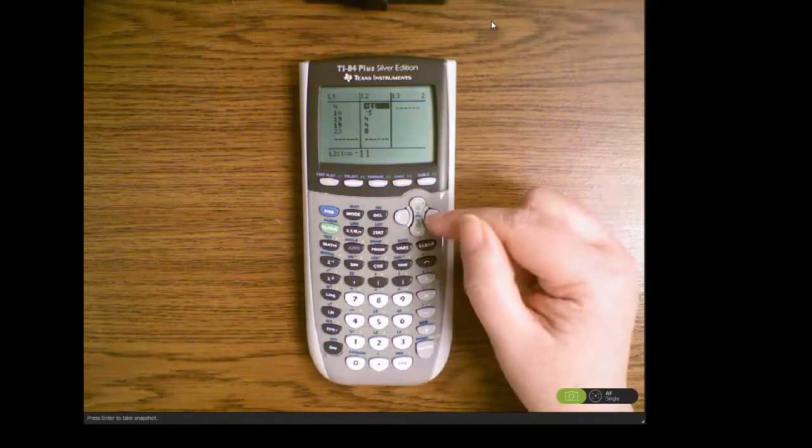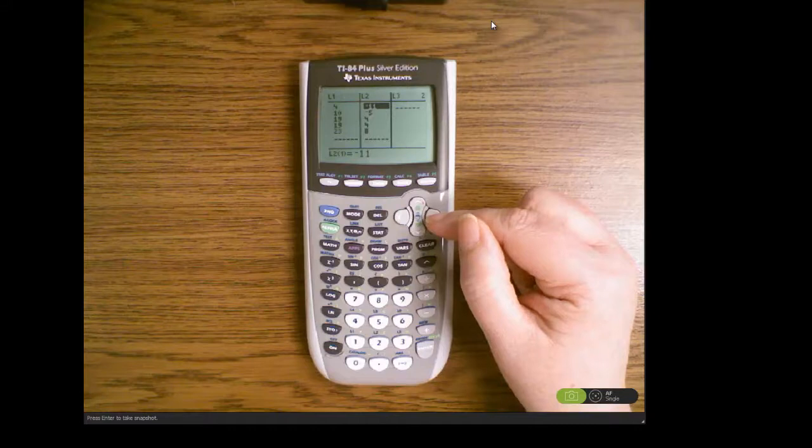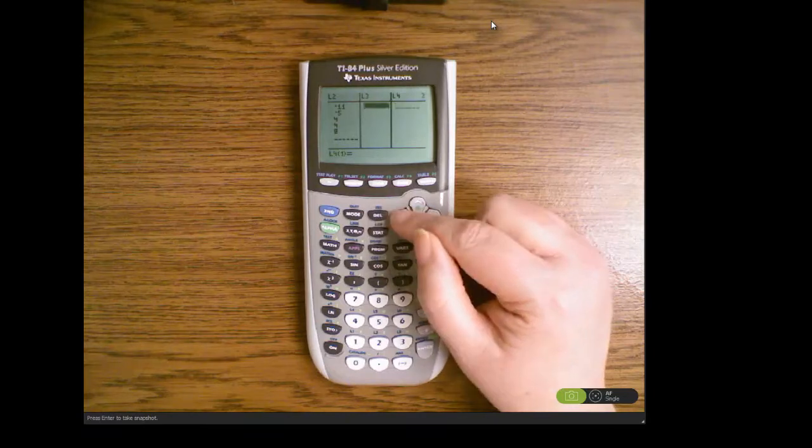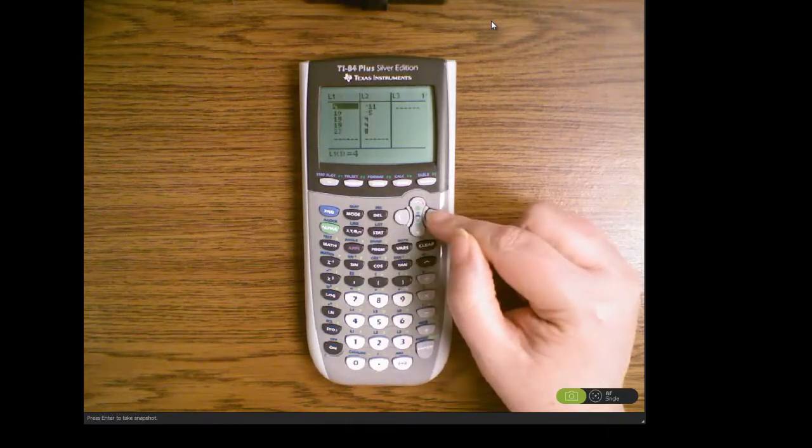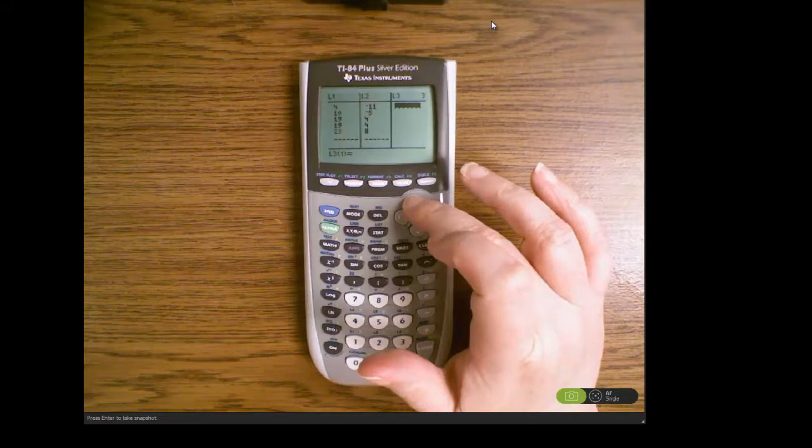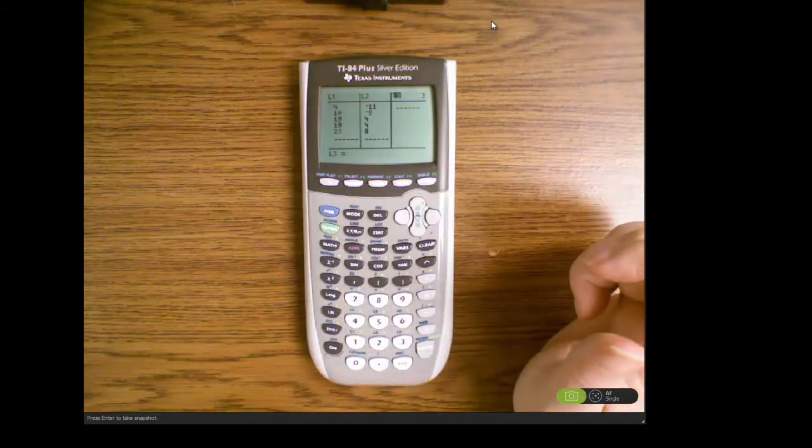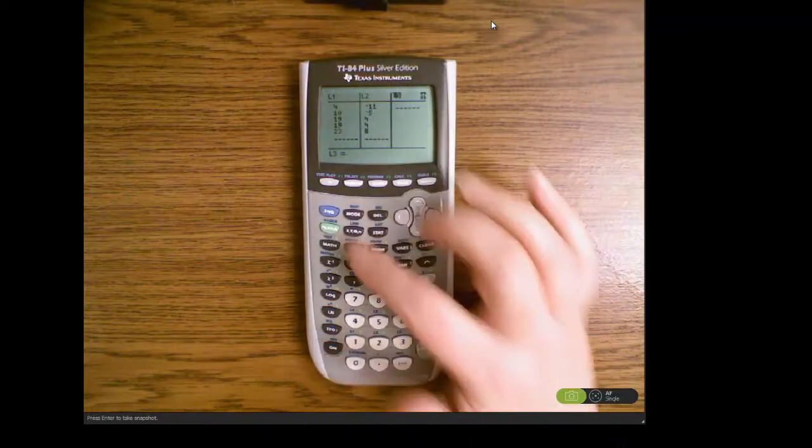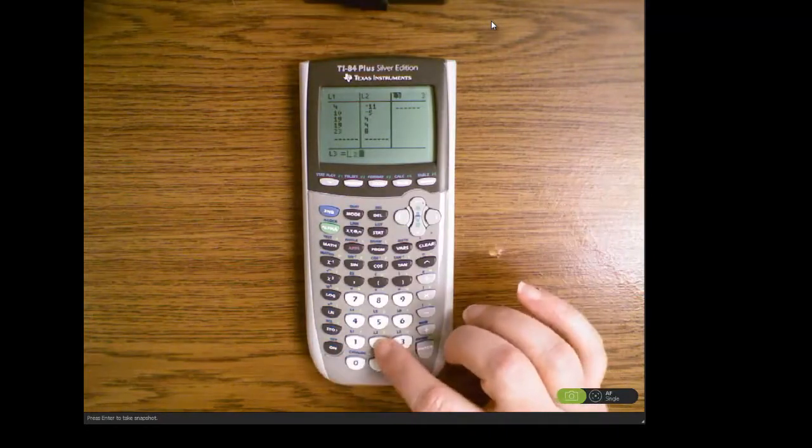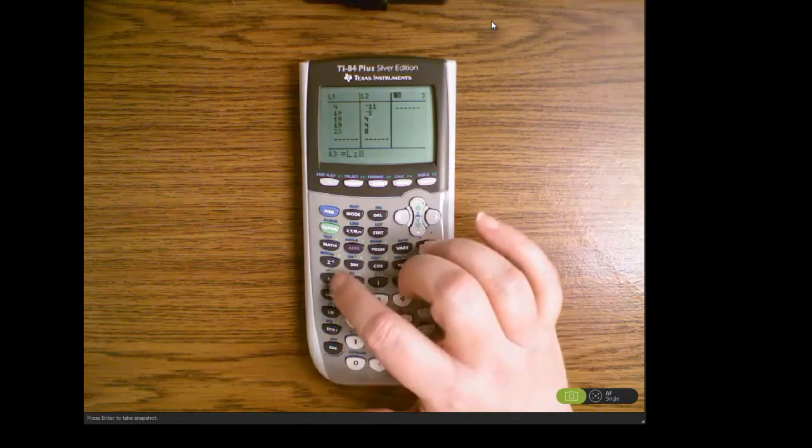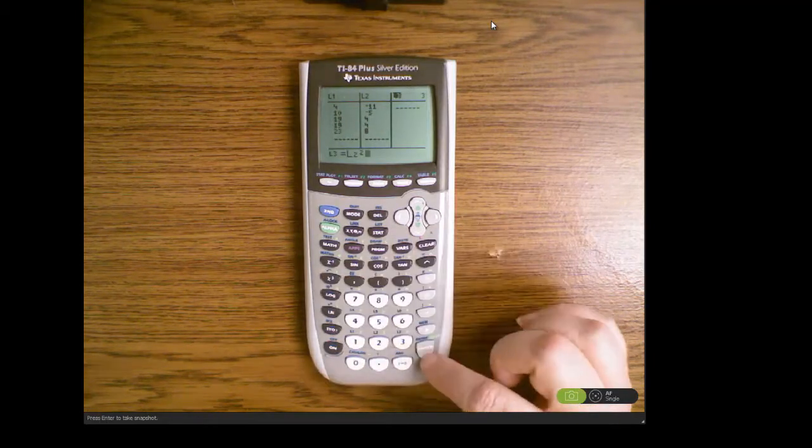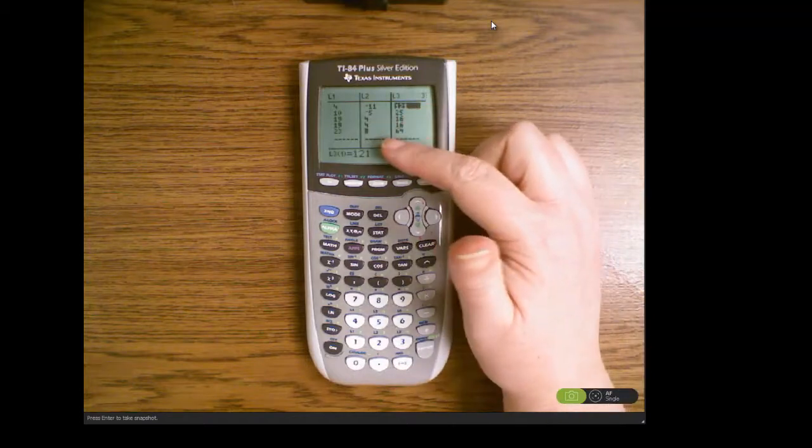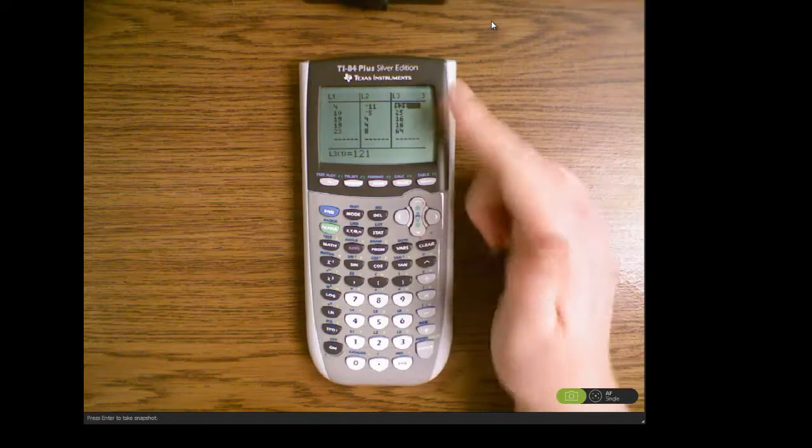That's part of the calculation. We don't need to do anything with it, but by doing that we can then come over here to list three and then come up again highlighting list three. We want to square list two, so we're going to go second L2 and then hit the x squared button here. That's going to square each of list two data values.